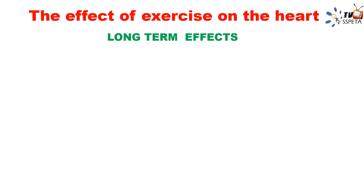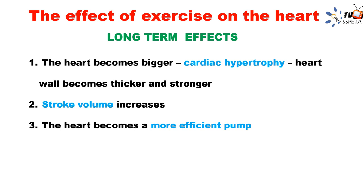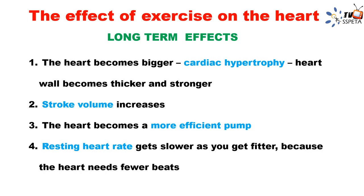Now the long-term effects of exercise on the heart. If you train for years, your heart becomes bigger — this is called cardiac hypertrophy. Your cardiac muscle becomes thicker and stronger, so in one contraction it can pump larger volumes of blood to all parts of the body. This increases your stroke volume and the heart becomes a more efficient pump. Your resting heart rate gets slower as you get fitter, because the heart needs fewer beats to pump blood around the body.